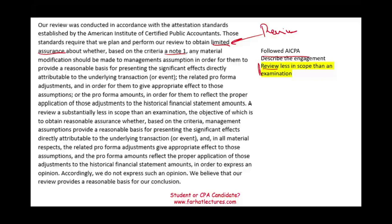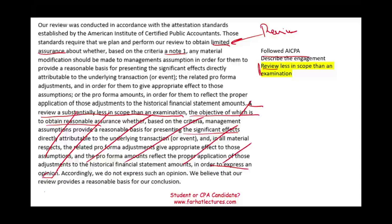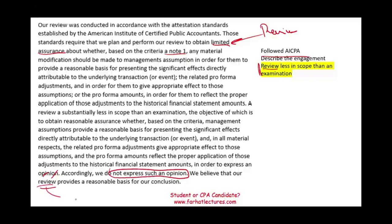We state that the review is substantially less in scope than an examination, the objective of which is to obtain reasonable assurance whether, based on the criteria, the significant effect directly attributable to the transaction is presented appropriately in all material respects, in order to express an opinion. We're not doing all of that — we're saying that's what an examination is. Accordingly, we do not express an opinion. This is a review. We believe our review provides a reasonable basis for a conclusion, not an opinion — and that conclusion comes with limited assurance.